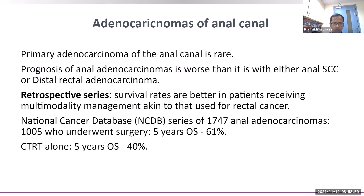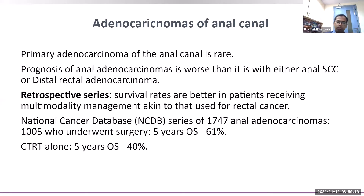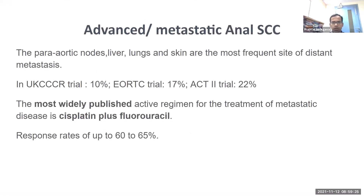A National Cancer Database series of around 1,700 anal adenocarcinoma patients showed that those who underwent surgery achieved a 5-year OS of 61 percent compared to only 40 percent in those treated with CRT alone like squamous cell anal cancer. This suggests treating anal adenocarcinoma similar to rectal adenocarcinoma, including surgery, may improve survival.